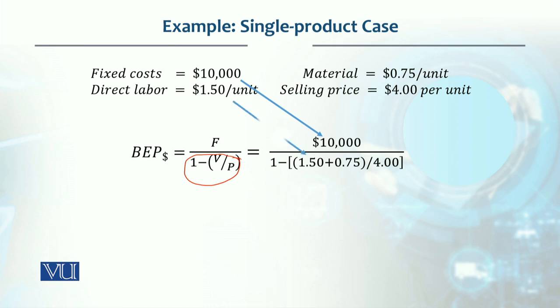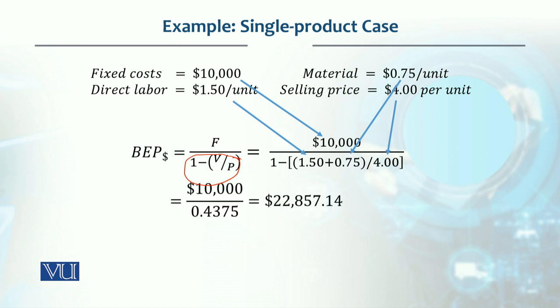Variable cost V1 is $1.50 and variable cost V2 is $0.75. We sum these to get the total variable cost, and the selling price is $4. Solving this gives us $22,857.14.